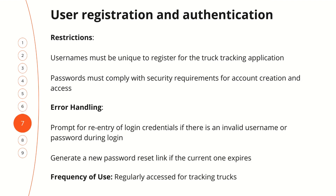Next, we will talk about restriction, error handling, and frequency of use. Restriction: the username must be unique to register for the track tracking application, and the password must comply with the security requirements for account creation and access. Error handling: prompt for re-entry of login credentials if there is an invalid username or password during login; generate a new password reset link if the current one expires. Frequency of use: regularly accessed for track tracking.